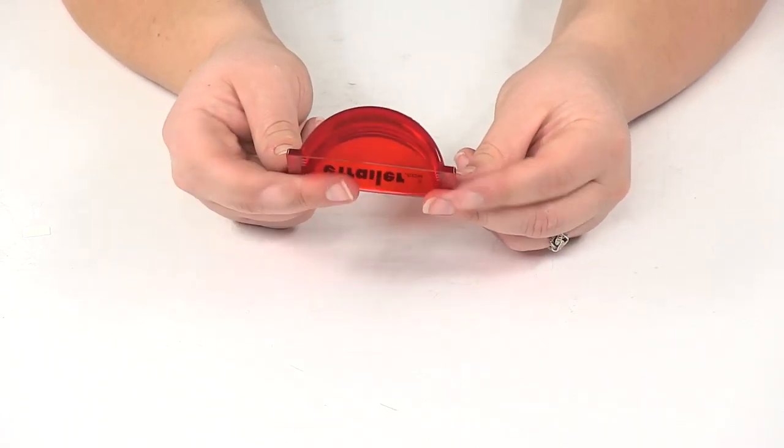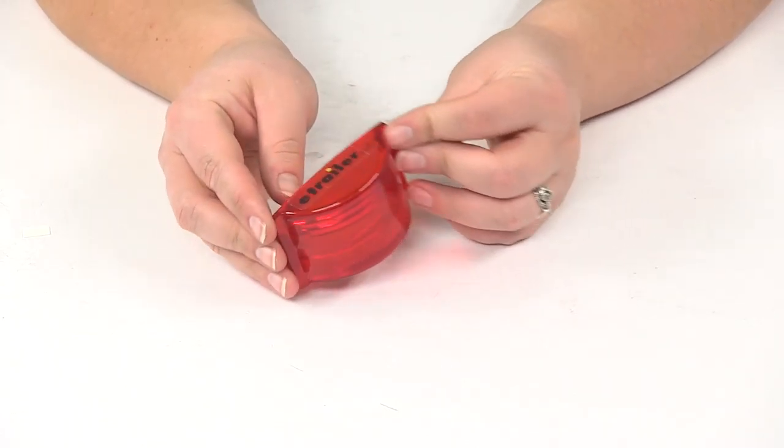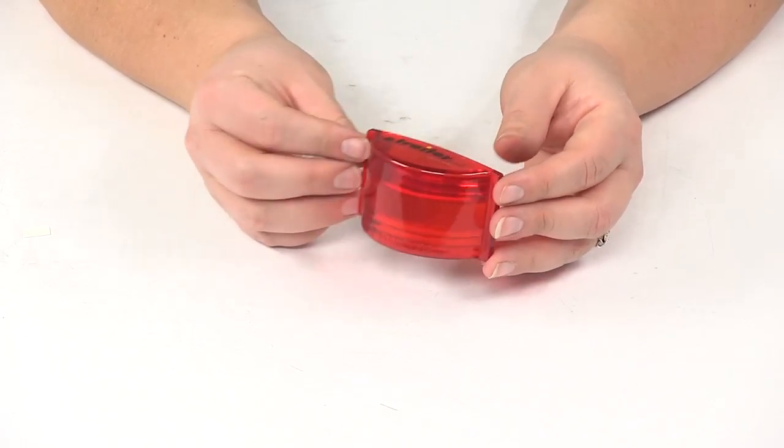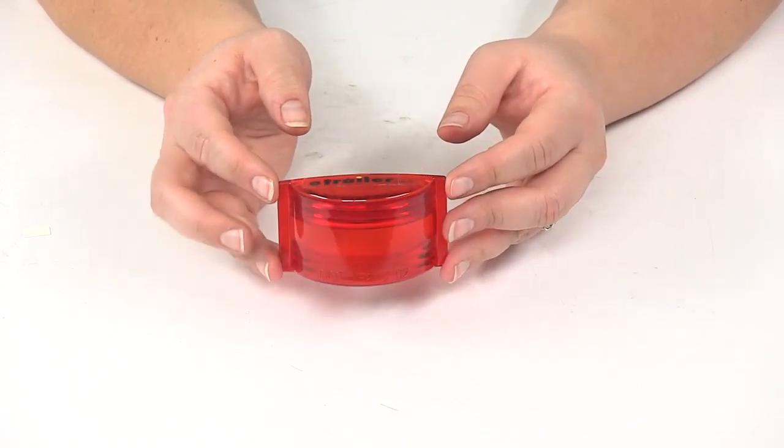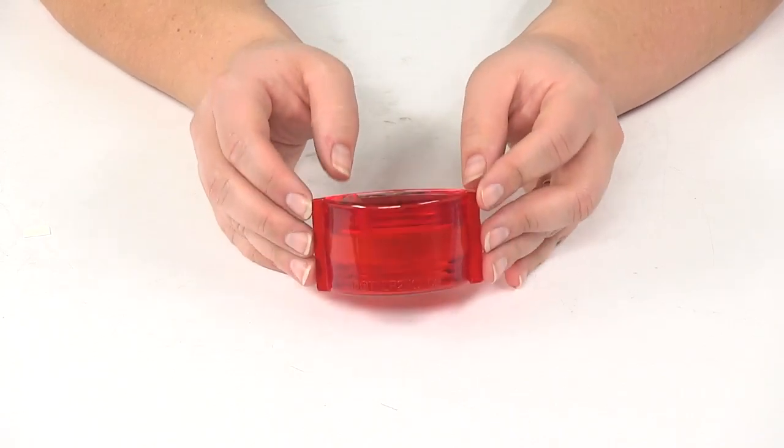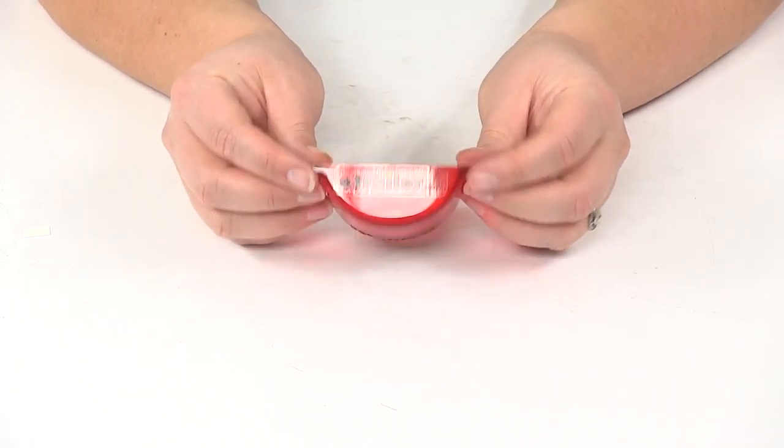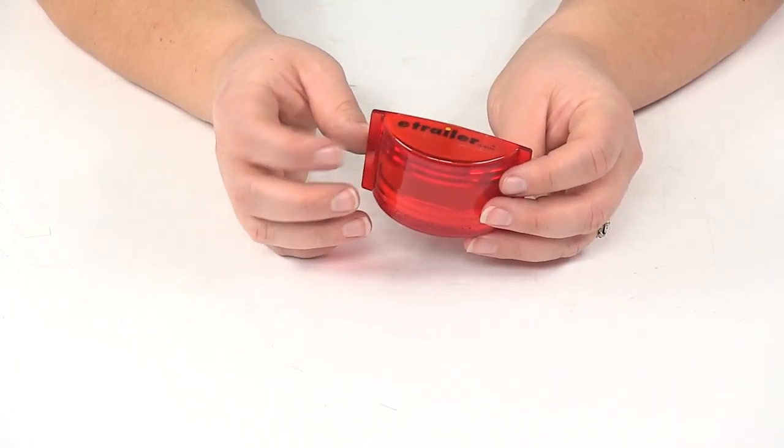So this is going to be a direct replacement from Optronics to replace that lens on your MC82 series armored marker or clearance light in case it were to become broken or missing.